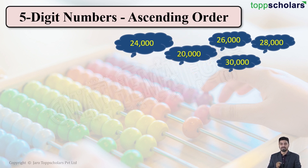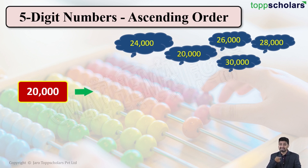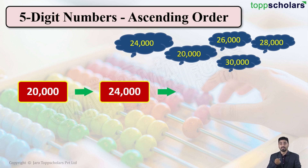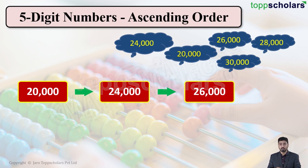20,000 is the smallest number, so we write 20,000 first. The next larger number, which is the smallest among the remaining, is 26,000. So we write down 26,000. After 26,000, the immediate next number is 28,000.